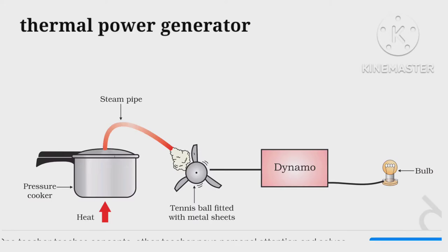First, we take the thermal power generator. It is a device where we use coal to boil water to steam that runs a turbine to generate electricity.